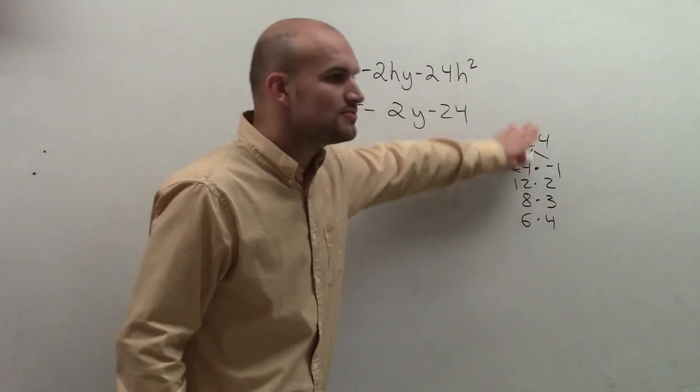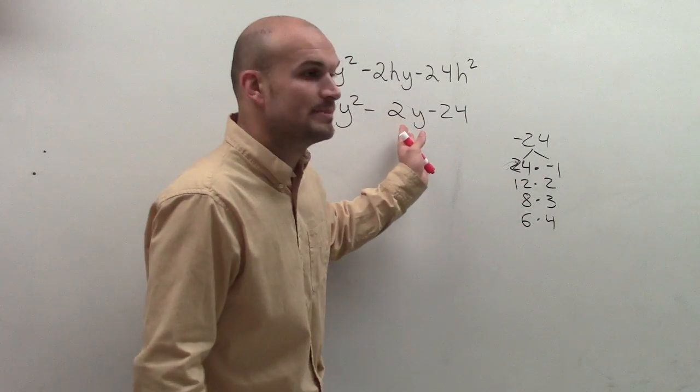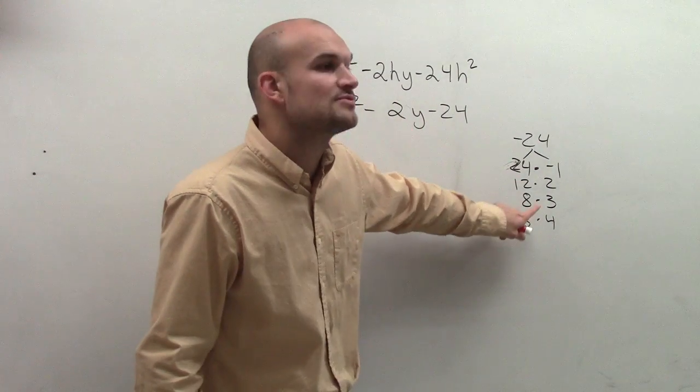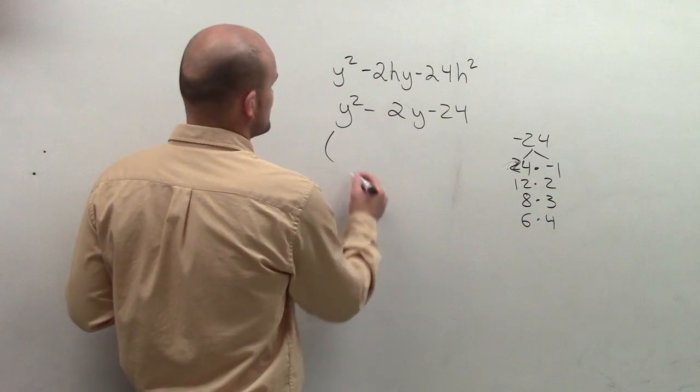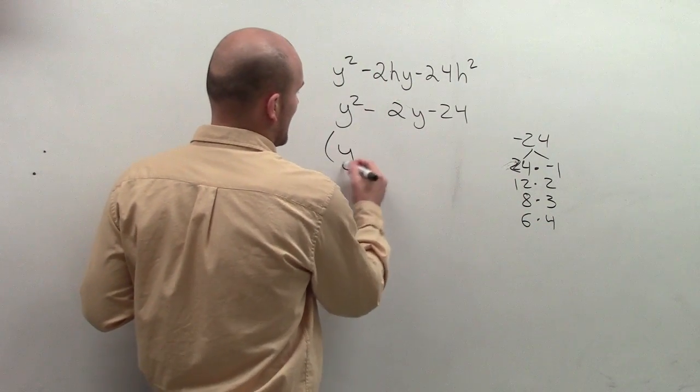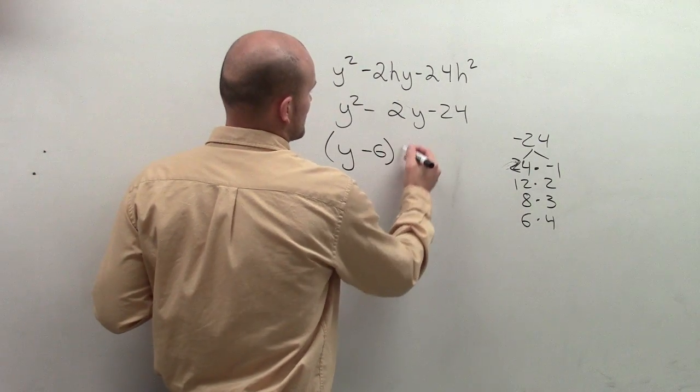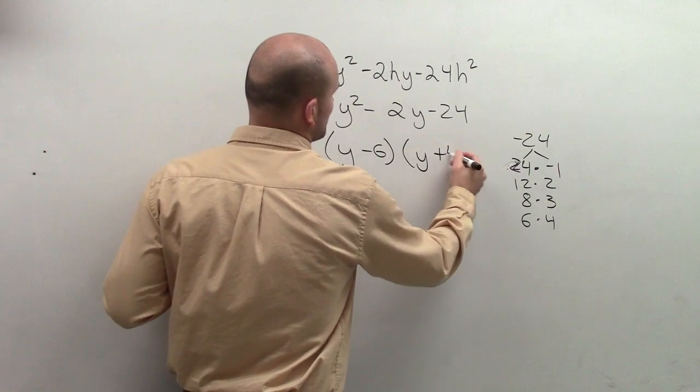So if we look at this, which one of these factors would have a difference of negative 2? Well, if you look at this, that means we have negative 6 and positive 4. So if I was going to write this as my factors, I would write y minus 6 times y plus 4.